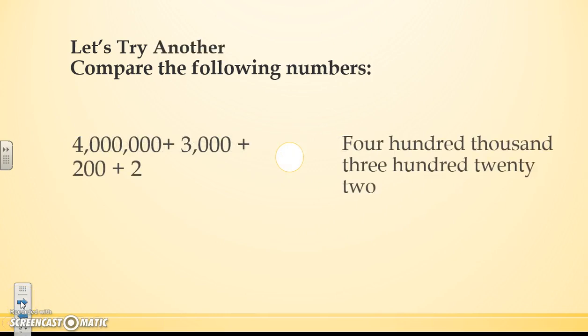Let's try another one that's a little bit more difficult. Here I have a number in expanded form and then I have a number that's in word form. I need to put both of them into standard form before I can compare. So I have 4 million plus 3 thousands plus 2 hundreds and 2 ones. That's now in standard form.